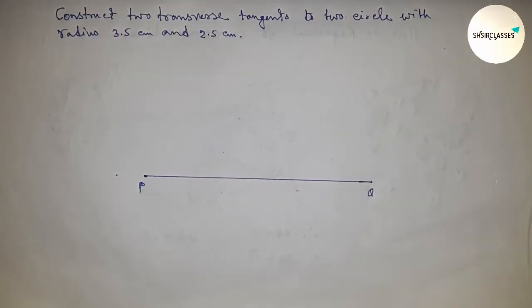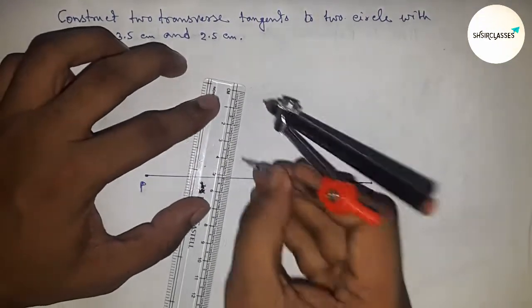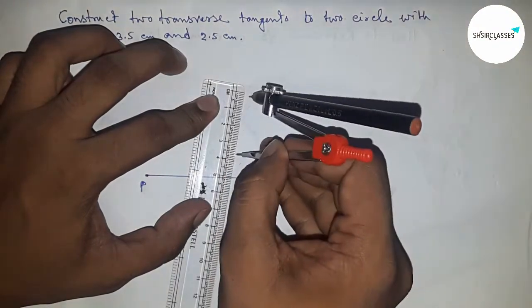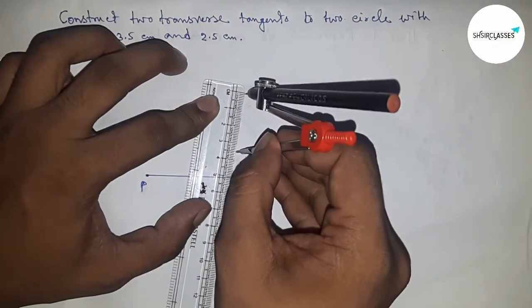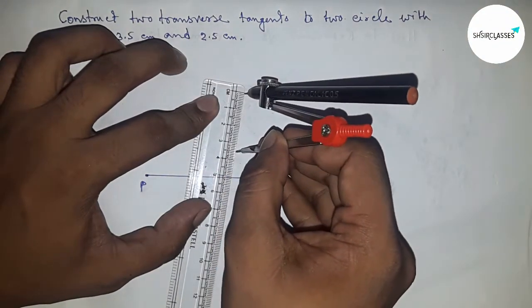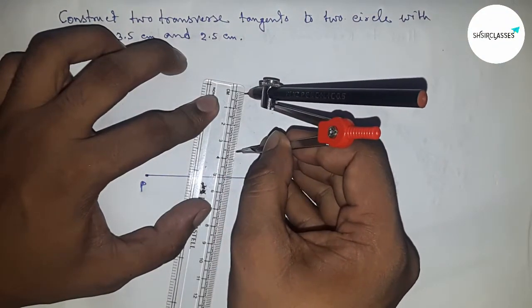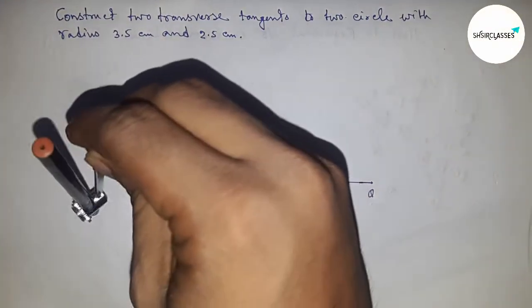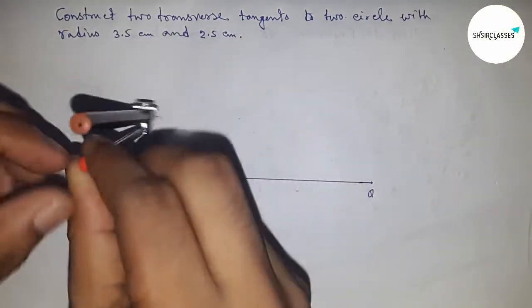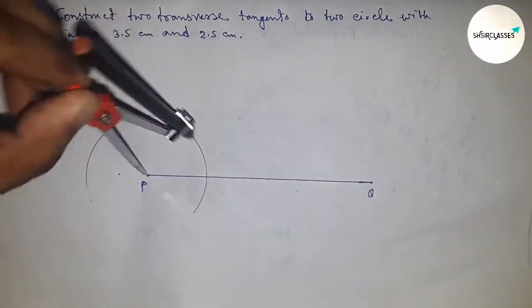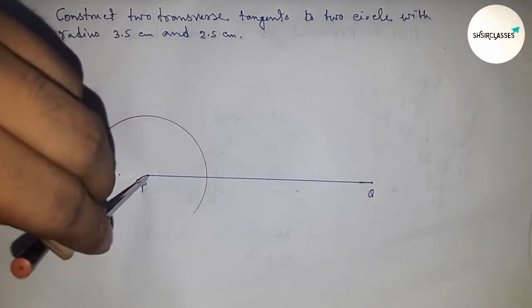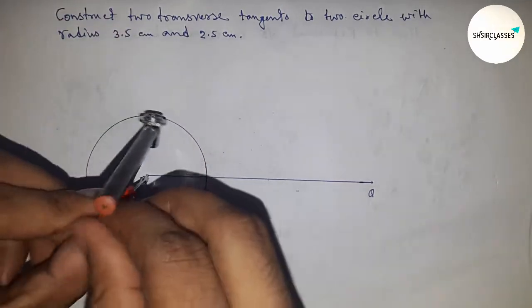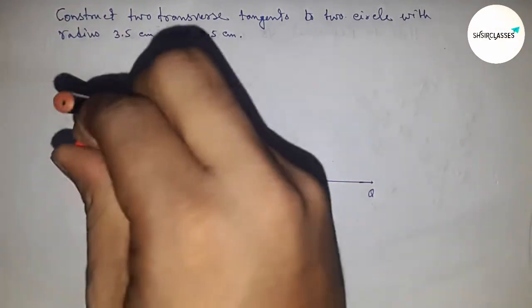Next, taking the radius 3.5 by compass and constructing a circle on the point P. Drawing a circle on the point P with radius 3.5, centered at P.